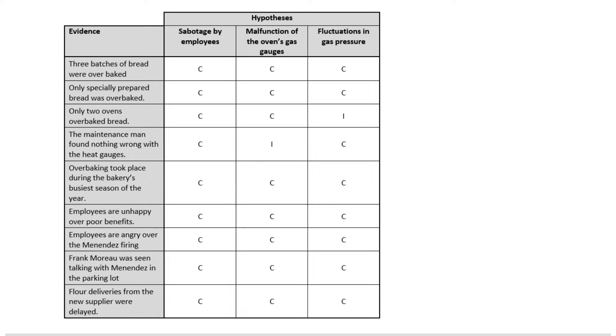Malfunctioning of the oven's gas gauges, could that produce the over baked bread? Yes it could, consistent. Fluctuations in the gas pressure could also produce the over baked bread, so that one's fully consistent. Likewise, only specially prepared bread was over baked. Is it possible the employees would have only targeted the specially prepared bread? Sure they could have, so C's all the way across on that one as well.